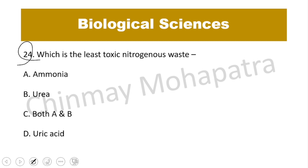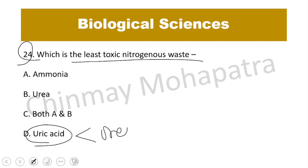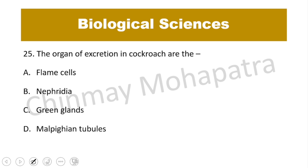Question number 24: Which is the least toxic nitrogenous waste? The toxicity sequence is: ammonia is most poisonous, then urea, then uric acid. The least poisonous is uric acid.